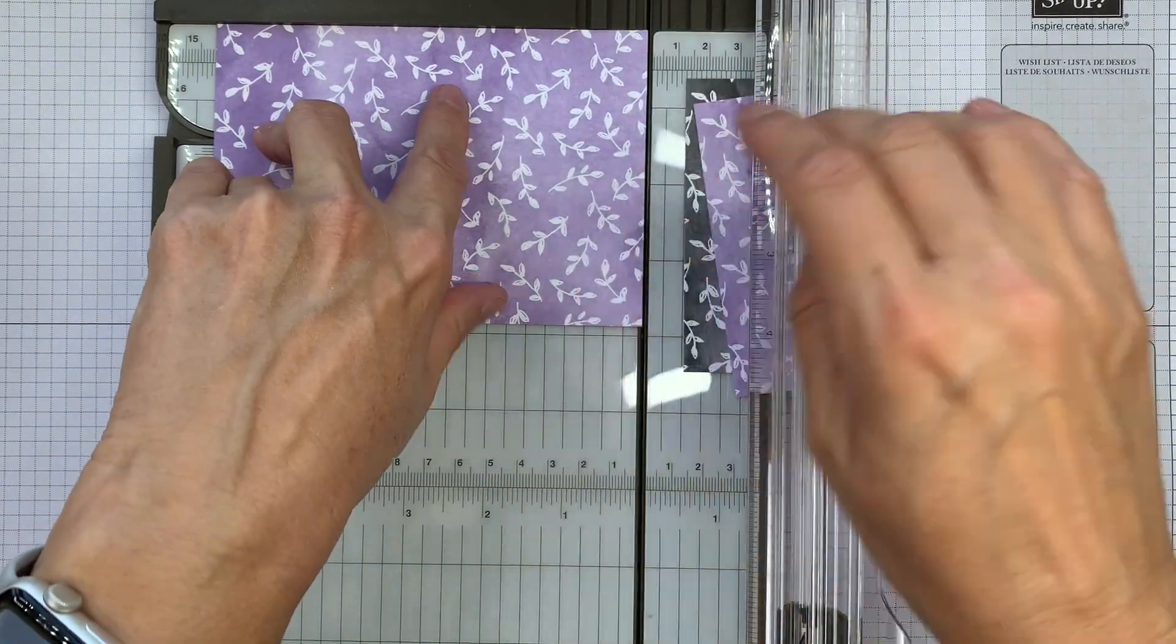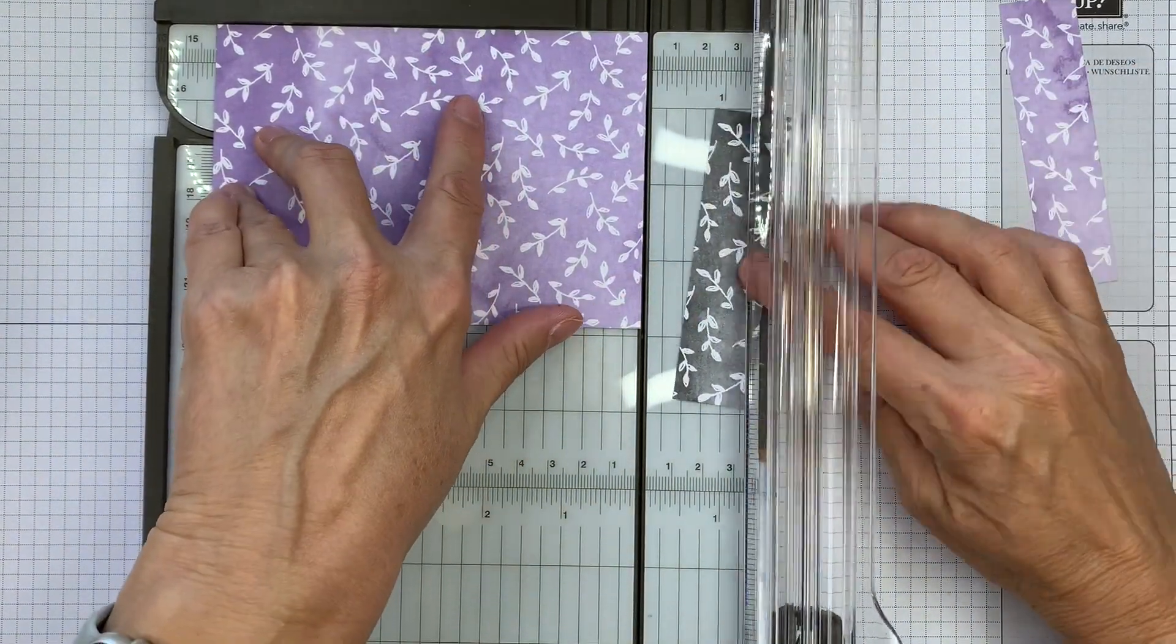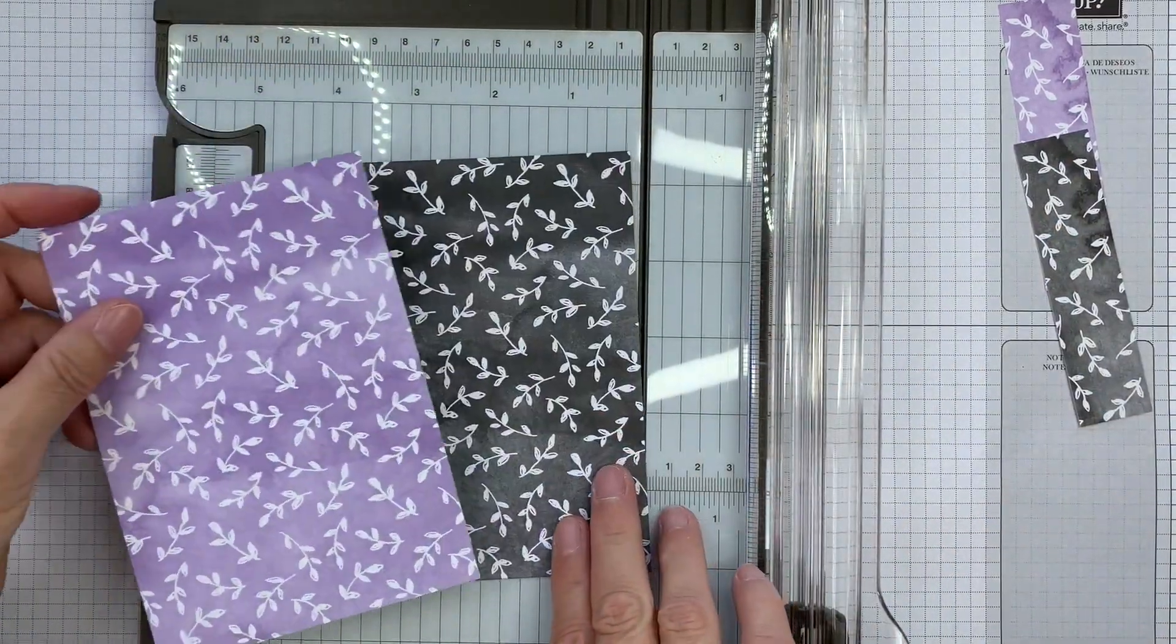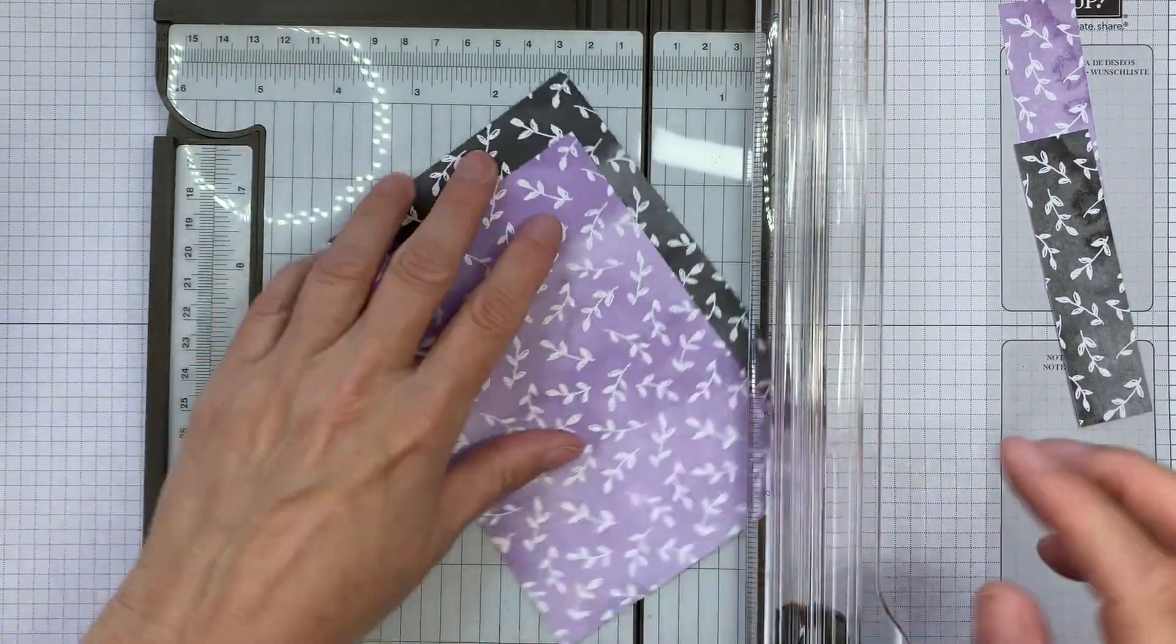So that gives me two identical card fronts. One purple and one black. And they're the same pattern.